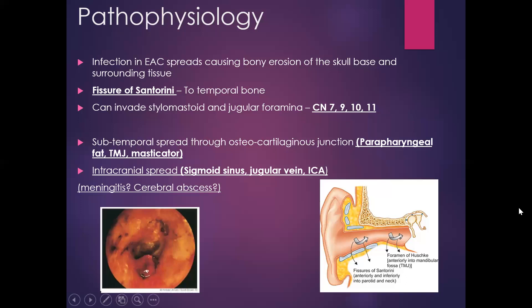Rarely it can also lead to intracranial complications including sigmoid sinus thrombosis, spread to the jugular vein, erosion towards the carotid artery, cerebral abscess, or meningitis. The mortality used to be much higher before modern treatment — previously around 50 percent.